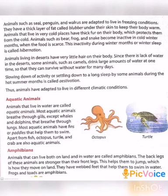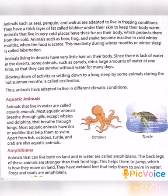Next, amphibians. Animals that can live both on land and in water are called amphibians — for example, frogs and toads. The back legs of these animals are stronger than their front legs, which helps them to jump and move on land. They also have webbed feet that help them to swim in water.